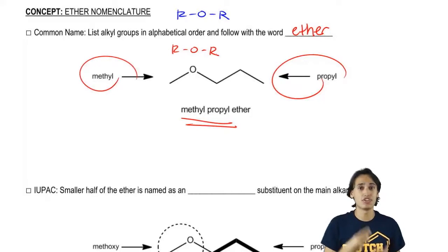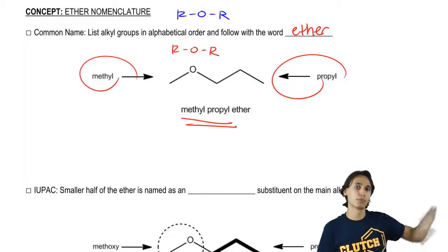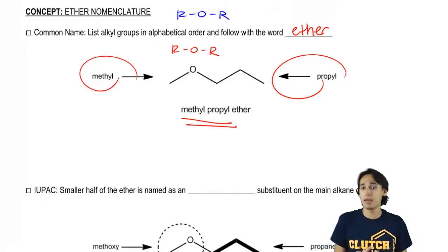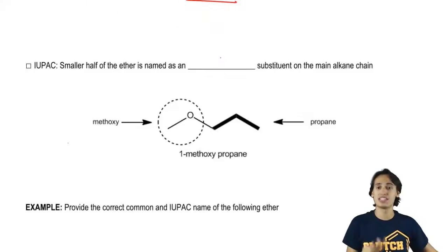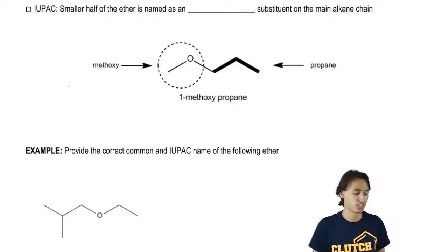But it does turn out that sometimes ethers get more complex, sometimes they have bigger branches on one side and it might be advantageous to use IUPAC. So let's go ahead and see what this same ether would look like if we used the IUPAC convention.